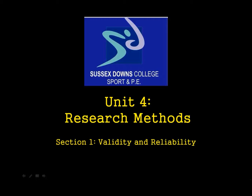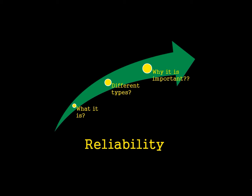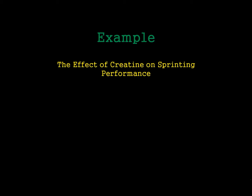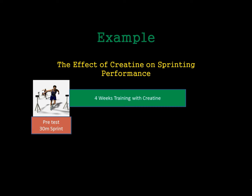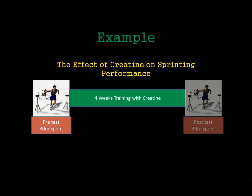Unit 4 Research Methods, Section 1: Validity and Reliability. Today we're going to discuss reliability — what it is, the different types, and why it is important in research. Let's use an example study to help guide us through: a study on the effect of creatine on sprinting performance. The researchers did a pre-test 30m sprint, then had subjects train for 4 weeks taking creatine, and did a 30m sprint test afterwards to see whether creatine would improve their sprint times.